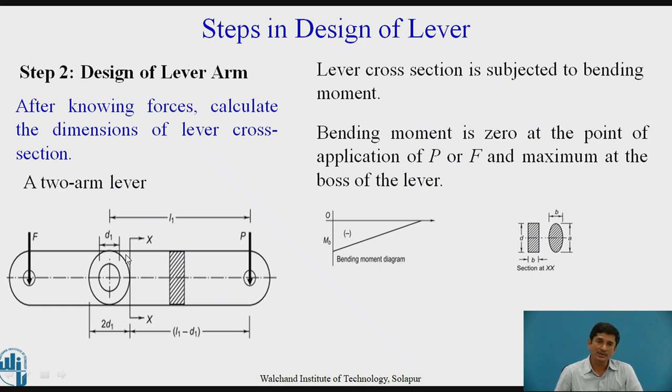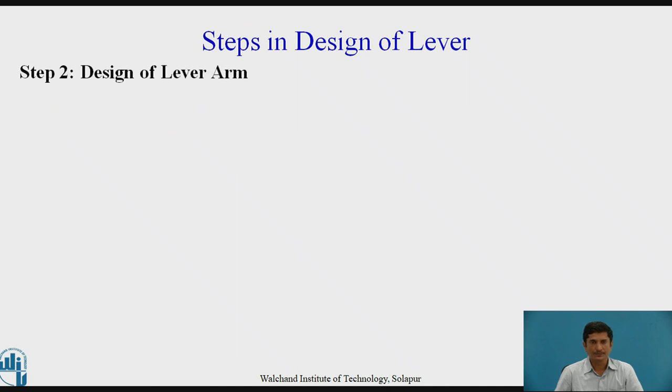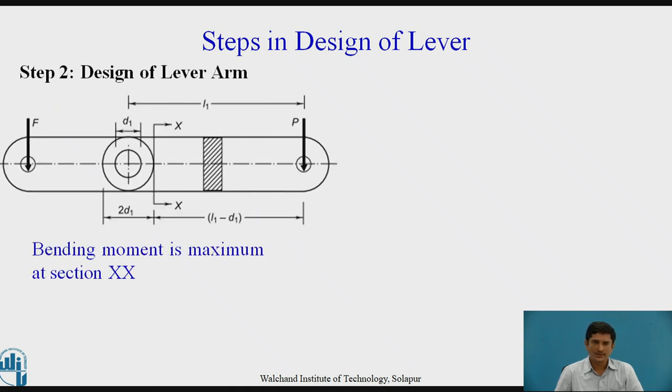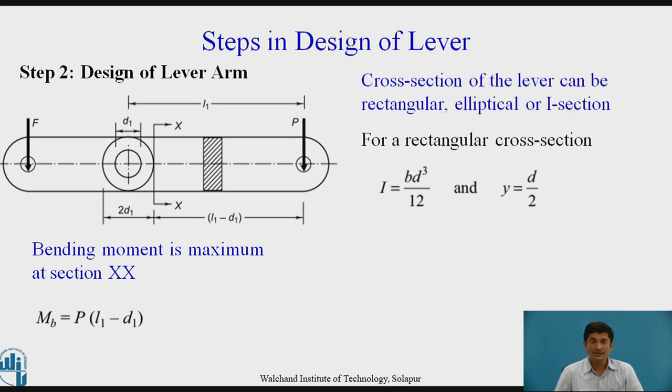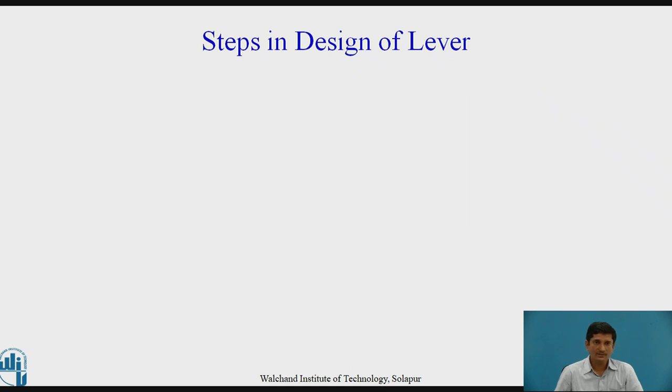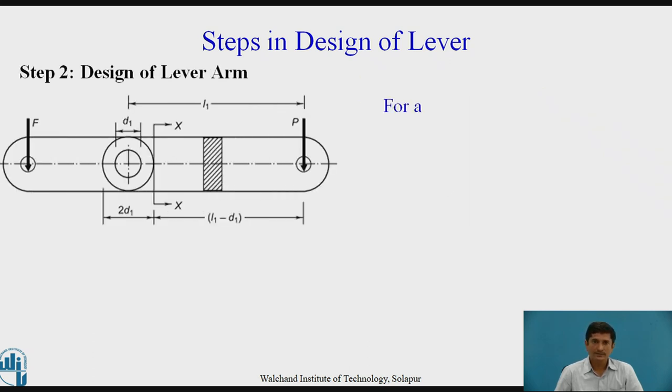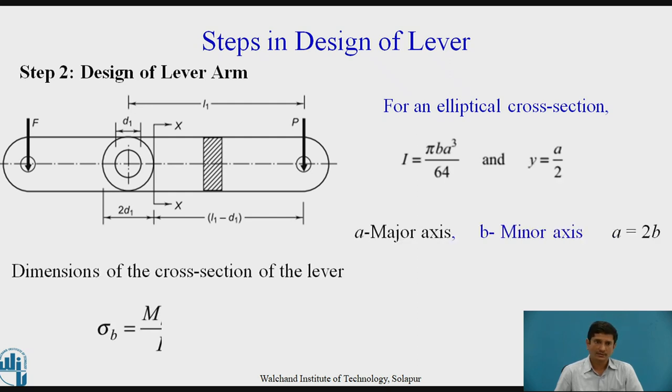Therefore what we can do is we can use a tapered lever in order to save the material. That is called as lever of uniform strength. We have seen this part. The final equations we have seen for rectangular cross section and for elliptical cross section. This is what is the design of a lever.